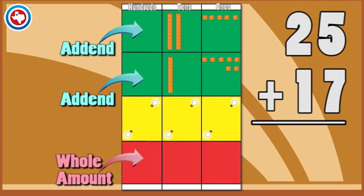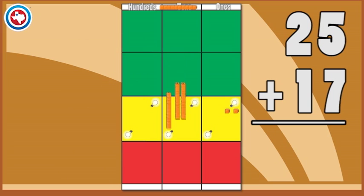After adding a column, students decide if there are enough ones, tens, or hundreds to make a group before making exchanges with their base 10 blocks.